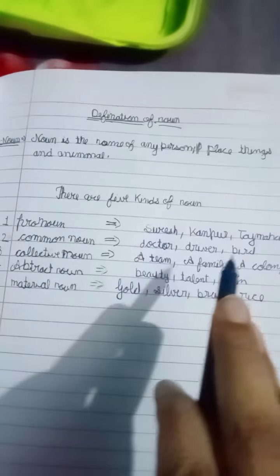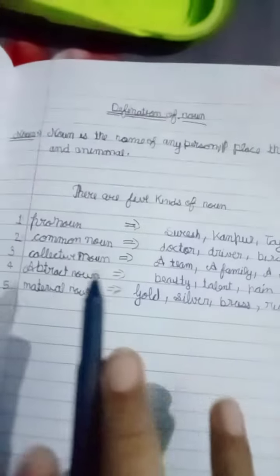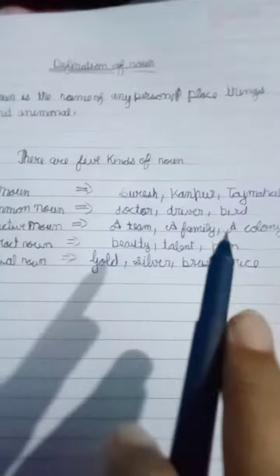Abstract noun: beauty, talent, pain. Material noun: gold, silver, brass, rice. This is the chapter of the noun.